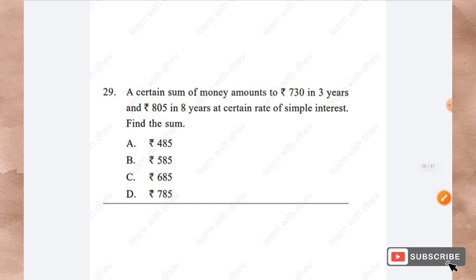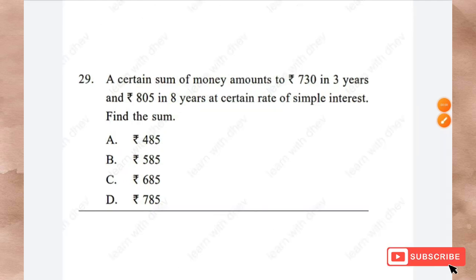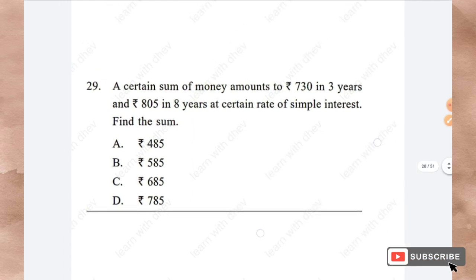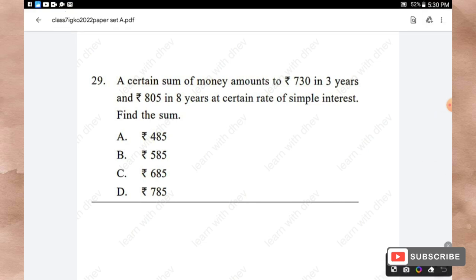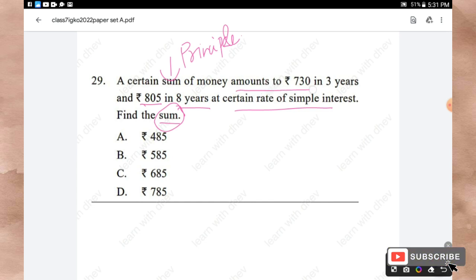Question 29: A certain sum of money amounts to ₹730 in three years and ₹805 in eight years at a certain rate of simple interest. Find the sum. Using the formula: Amount = Principal + Interest. We first find the difference in amounts: ₹805 − ₹730 = ₹75, which is the interest for (8 − 3) = 5 years.